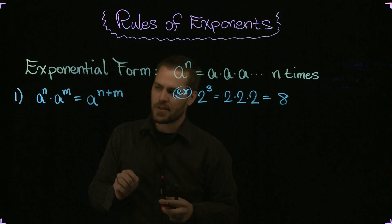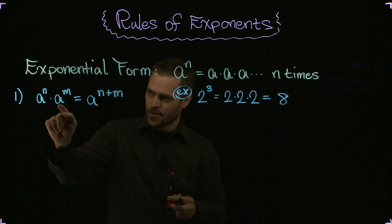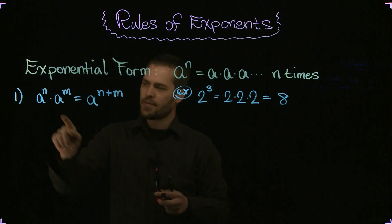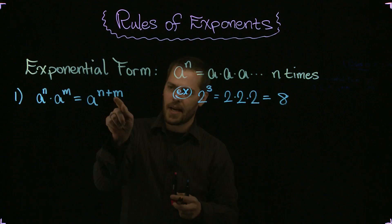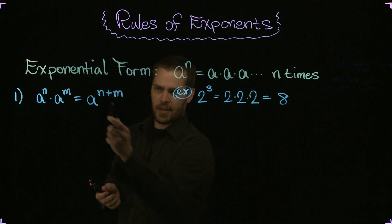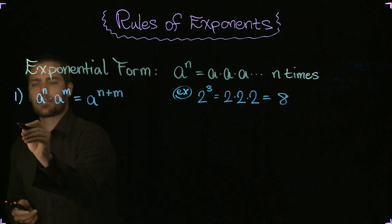Now that's only true if this is a and this is also a. This is called the base of an exponential expression. And if the base is the same when you're multiplying two exponential expressions together, then you can add the powers. But they have to be the same for this to work. And I invite you to show that that's true using this definition when you get a chance.